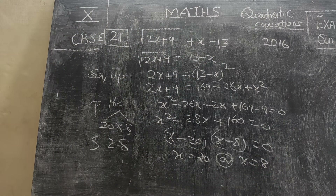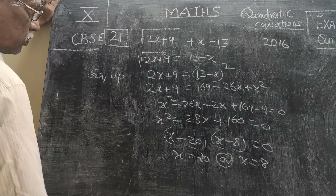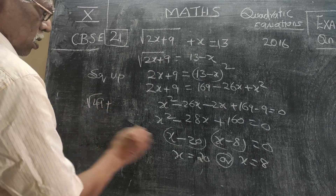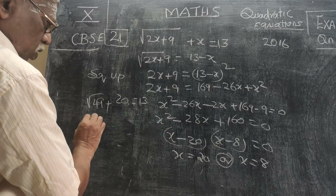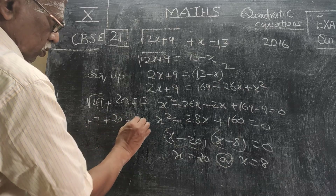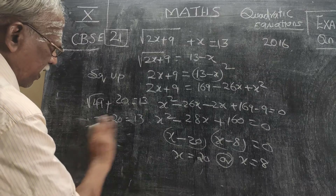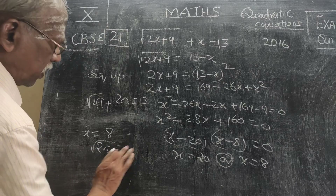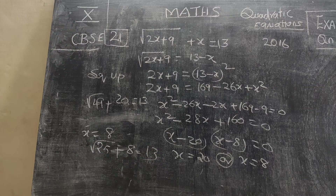Now substitute back to verify. When x=20: √(2×20+9) = √49, and 13−20 = −7. Since √49 can be +7 or −7, if we take minus 7 it satisfies; otherwise it does not. When x=8: √(2×8+9) = √25 = 5, and 13−8 = 5. So 5+8=13, which checks out. Therefore the valid values of x are confirmed.